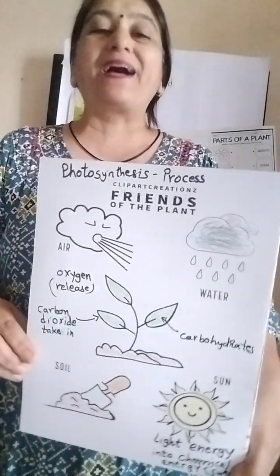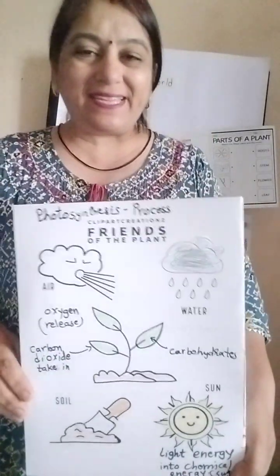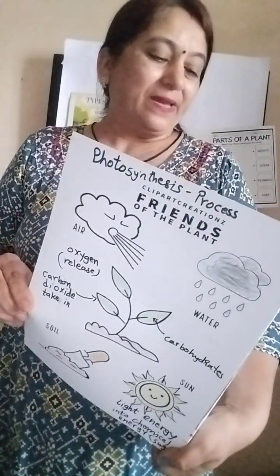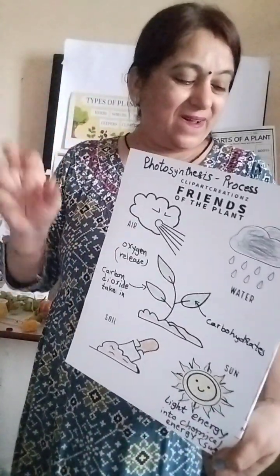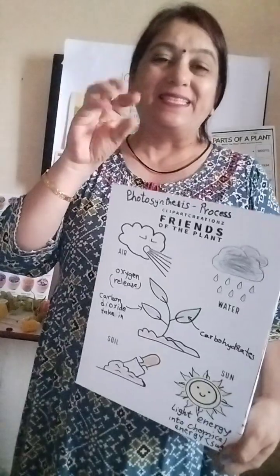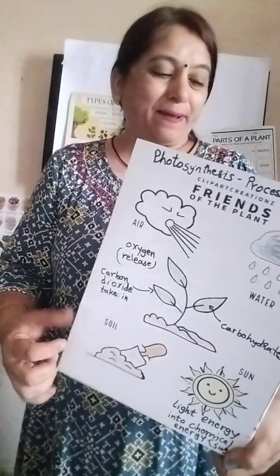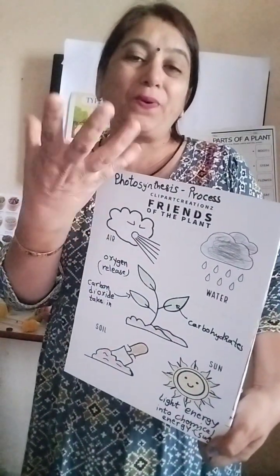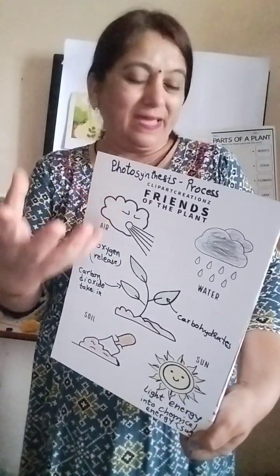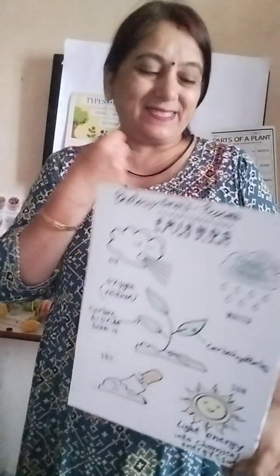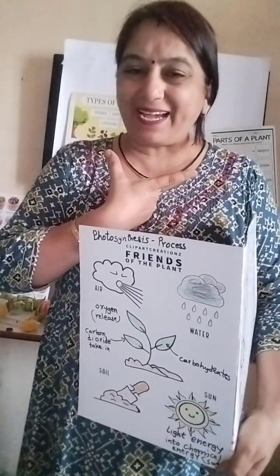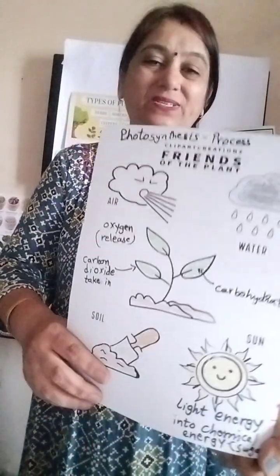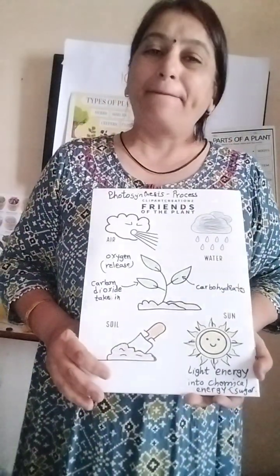The farmer plants a seed, the rain begins to fall, the sun begins to shine, the plants begin to grow, the buds begin to open, the flower smiles at us. So children, like this we grow the plants.